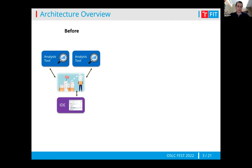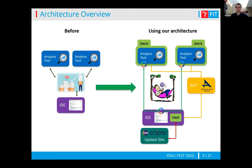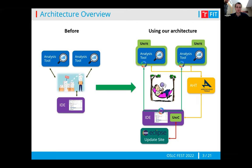Currently, a developer needs to manage all his tools manually, which can take quite a lot of work. Our goal is to make it look different, where you have analysis tools as web services wrapped by Unite — that's what makes them into web services. The developer then has a plugin that uses Unite in their IDE, here in Eclipse. The IDE does all the work for the developer, so he doesn't need to do nearly as much as before. We use the Eclipse Arrowhead framework to do the discovery and automatic configuration.